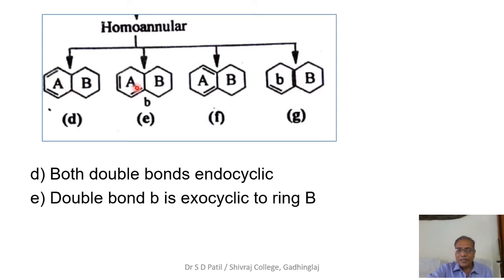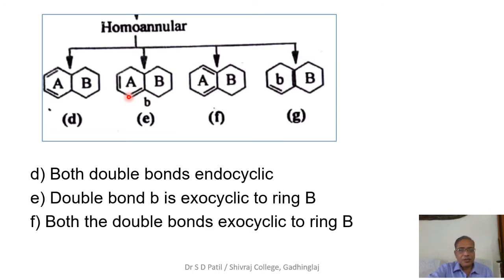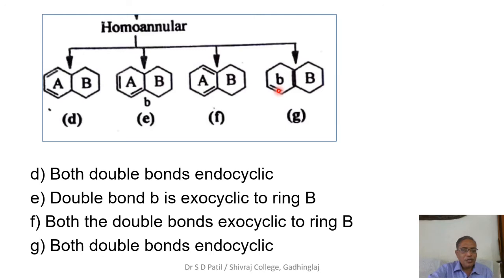In the next structure, there are again two rings A and B, but the double bond B is exocyclic to ring B because it shares a common carbon with the ring while the other carbon is outside the ring. In structure F, both double bonds are endocyclic in ring A but additionally they are exocyclic to ring B, giving two exocyclic double bonds to ring B. You must consider these structural differentiations when calculating theoretical lambda max values.